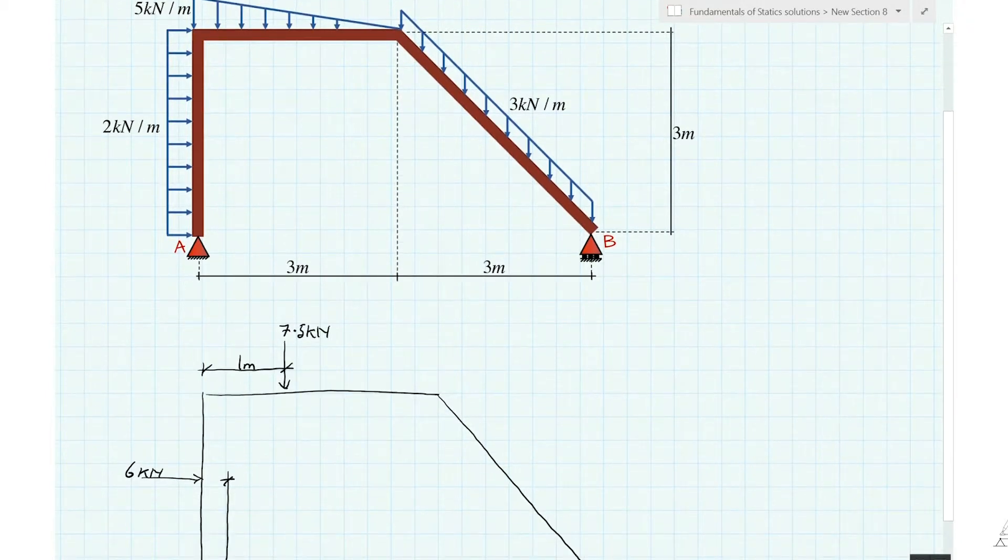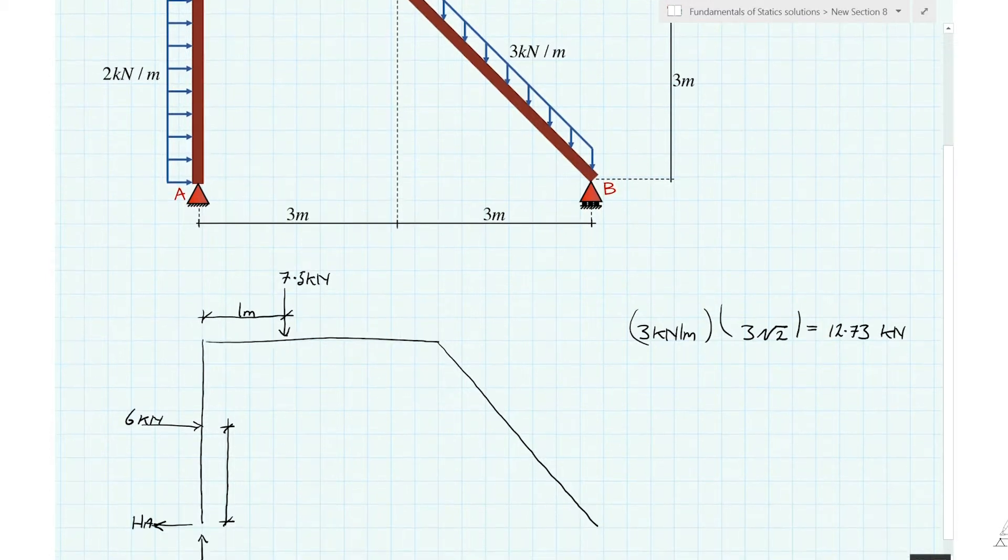Okay, now we have our uniformly distributed load on the inclined member. So we've got three kilonewtons. Let's draw this one out here. We've got three kilonewtons per meter. Now that's acting along this inclined member, which has a length of, it's at 45 degrees, so it's going to have a length of three root two. Okay, so three times three root two is going to be 12.73 kilonewtons. And that's going to act halfway along.